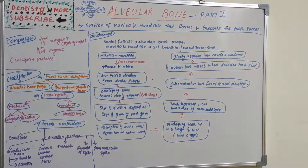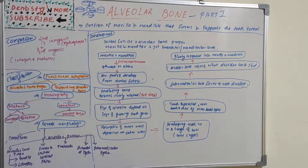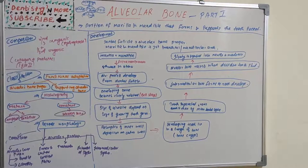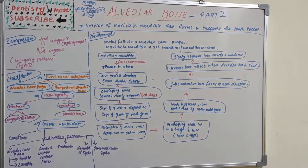Alveolar bone is composed of inorganic and organic matter. Two-thirds is inorganic matter, and the remaining one-third is organic matter. Inorganic matter includes hydroxyapatite crystals and minerals such as calcium, phosphorus, carbonate, citrate, hydroxyl ions, magnesium, sodium, potassium, and fluoride in very small quantities. Organic matter consists of collagen and non-collagenous proteins such as osteocalcin, osteonectin, sialoprotein, phosphoproteins, and proteoglycans.